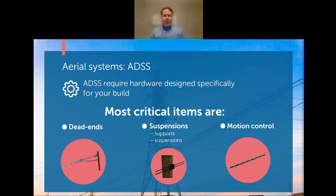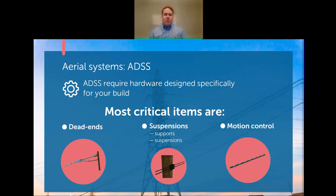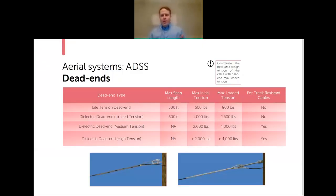Looking at the hardware for ADSS, you will spend a bit more up front, but the long-term benefits are great. The three most critical items are dead ends, suspensions, and motion control. When selecting dead ends and supports, the three main factors are span length, max load tension, and whether you're using a track-resistant ADSS cable. For fiber-to-home applications, most cables are in your distribution area, so track-resistant cable is generally not needed.